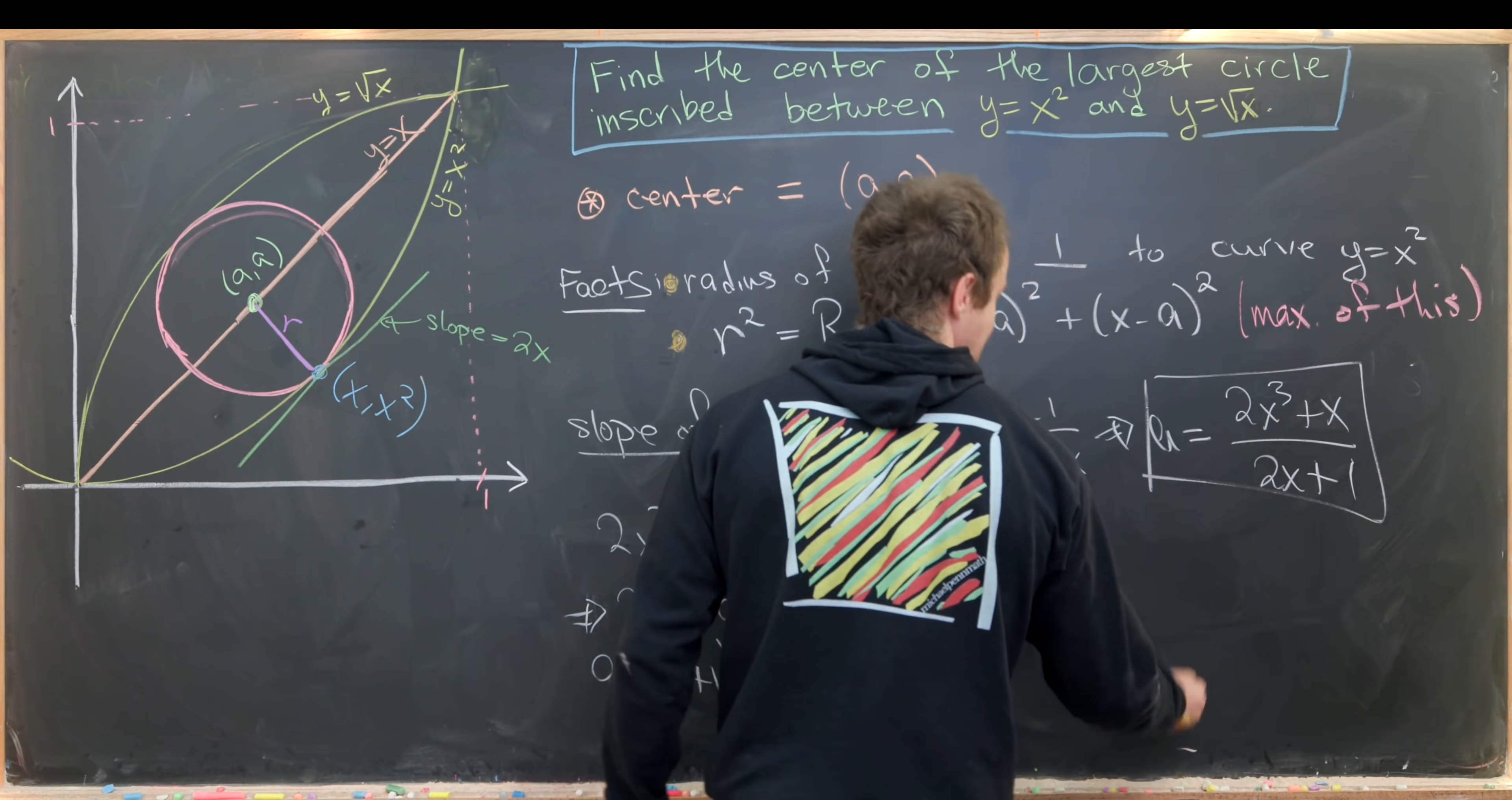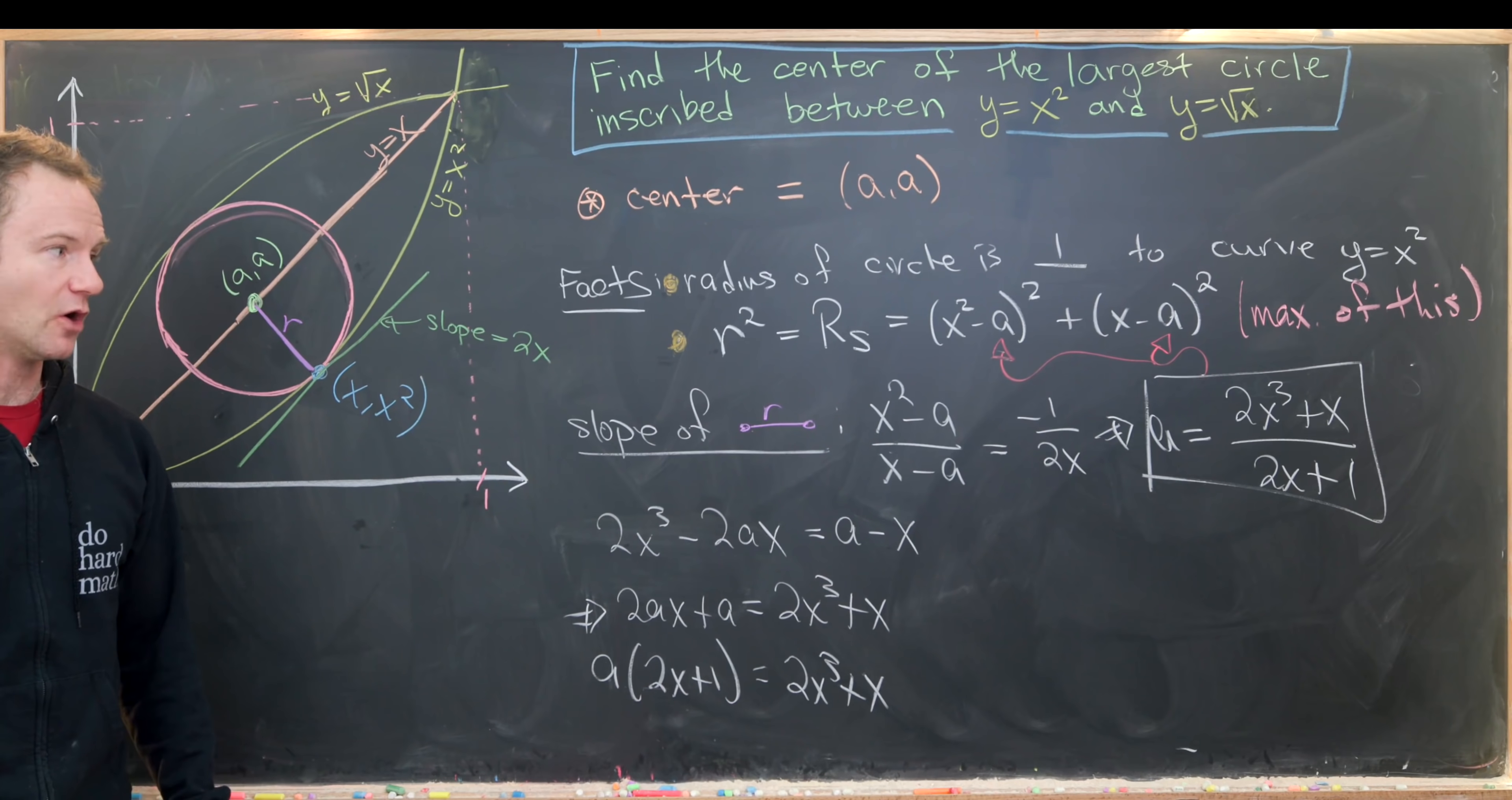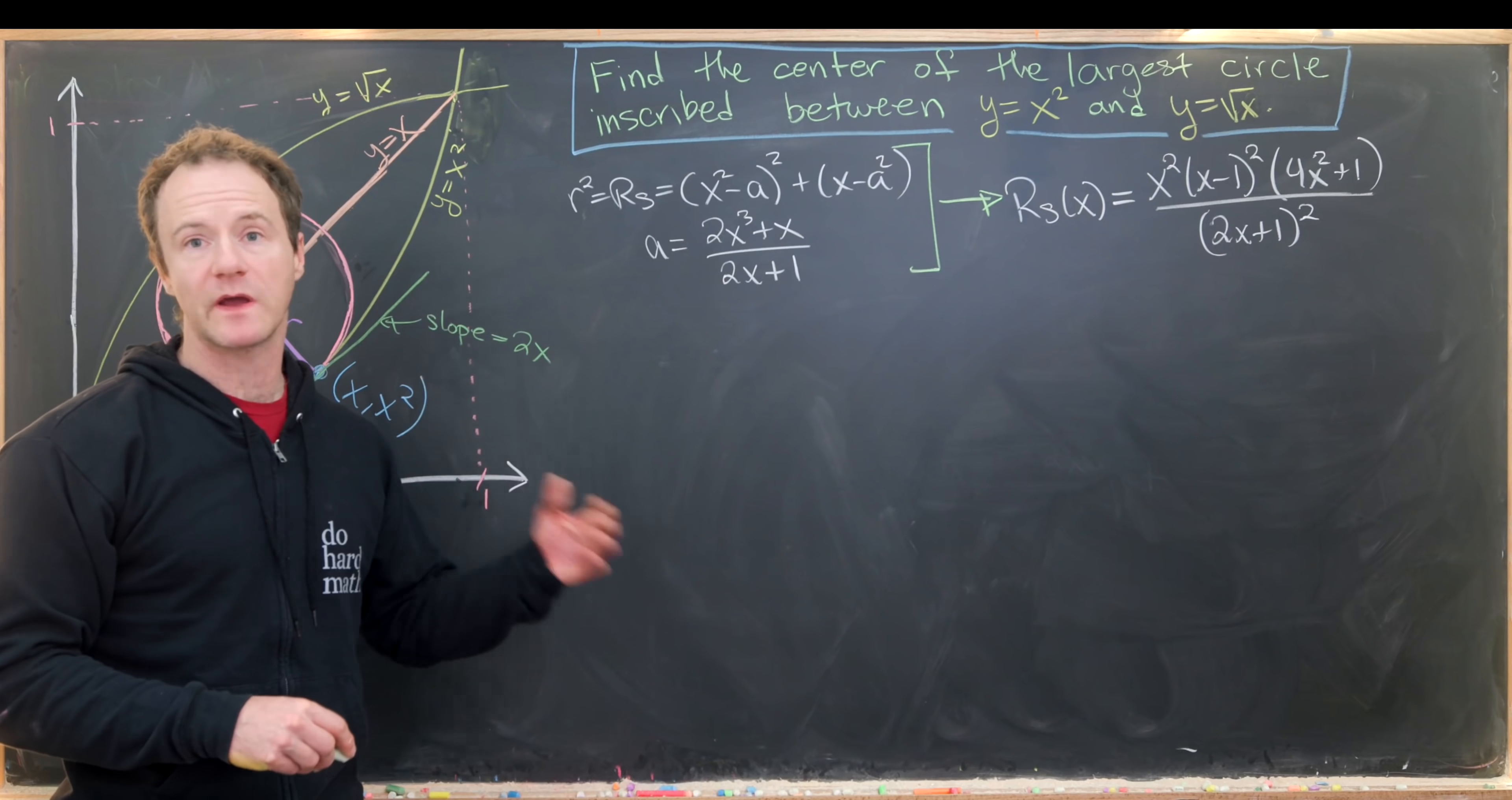Now we can take this and plug it into our radius squared function and we've got a function of one variable that we can maximize using first semester calculus. Let's take this information and bring it to the top, and then work through the final steps.